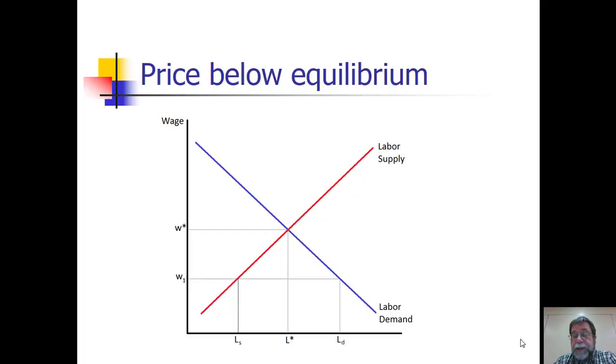If the wage for some reason is temporarily below the equilibrium, that means that firms want to hire more workers than there are workers available. This occurs in this example at a wage of W1. At this wage rate, the quantity of labor demanded is LD and the quantity supplied is LS and the difference between those would represent a shortage. If firms can't hire as many workers as they need, they would tend to bid up the price of labor until that shortage disappears, which occurs once again when we get to the equilibrium wage of W star.